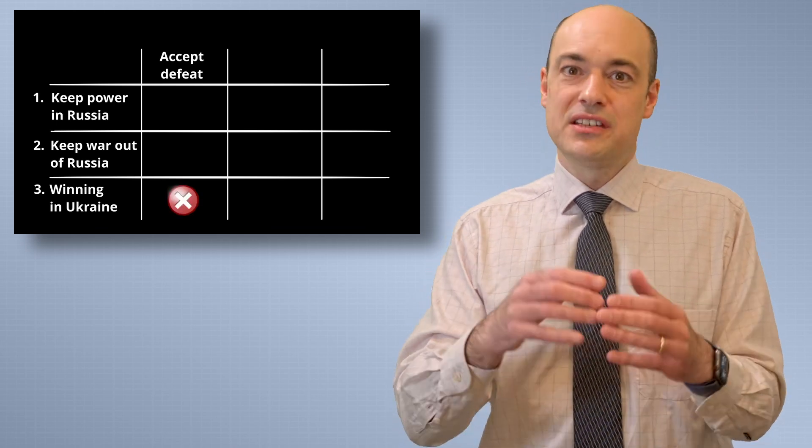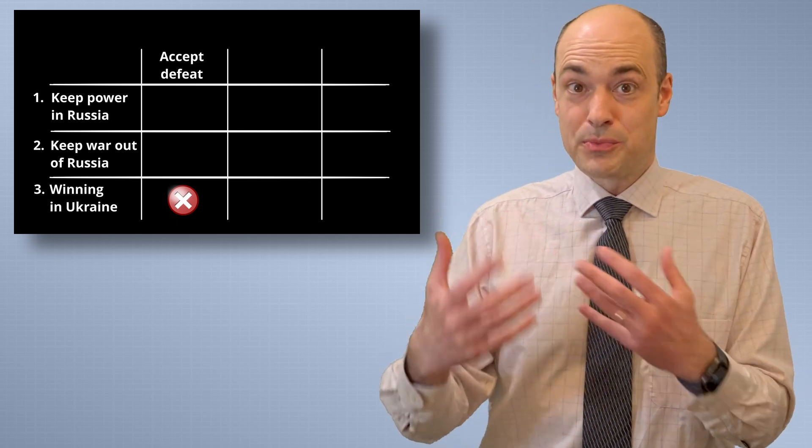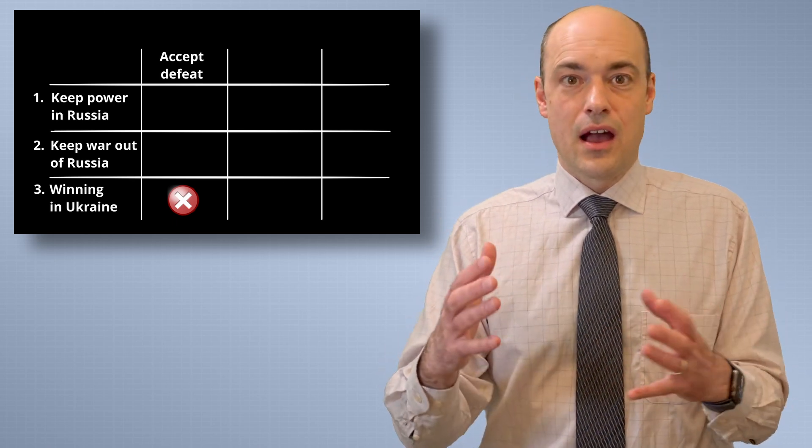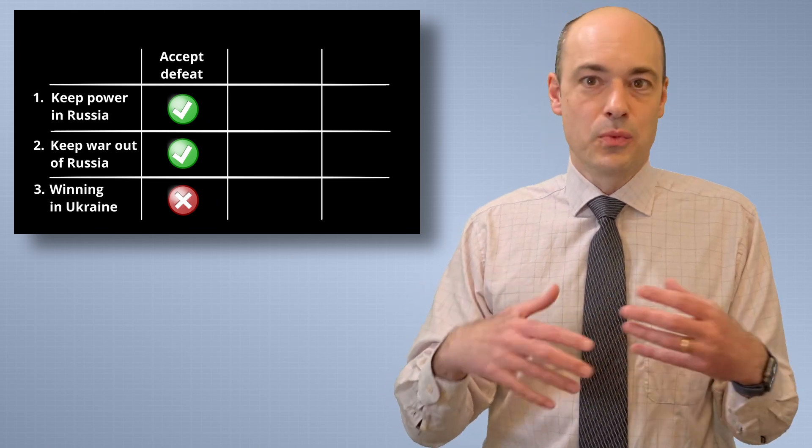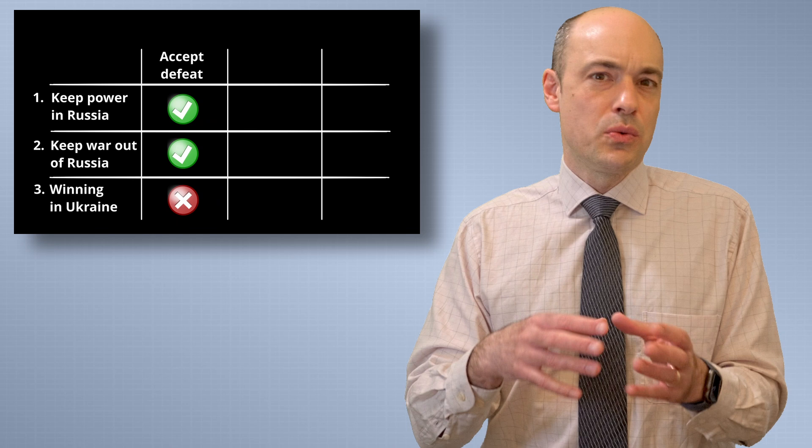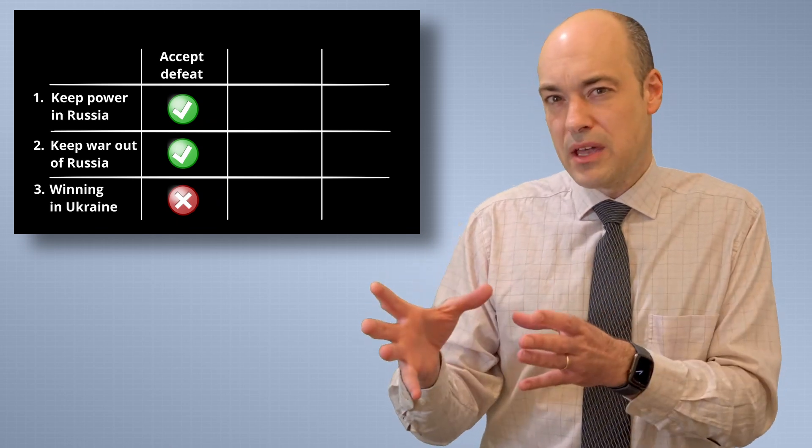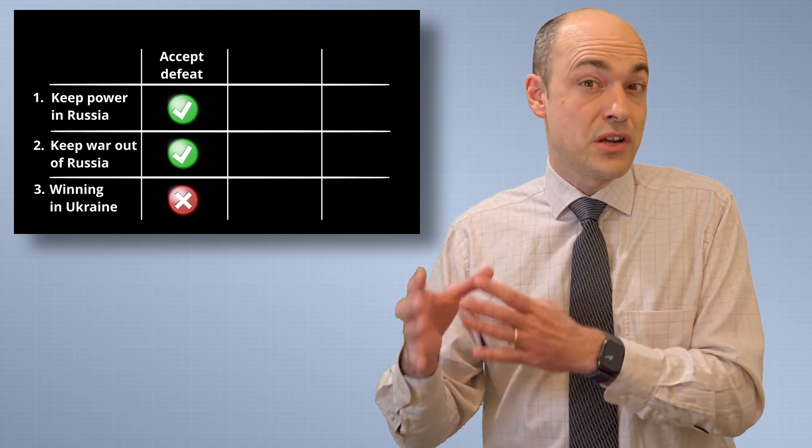If we measure this outcome against the priorities, then obviously Russia won't achieve their third priority of winning in Ukraine. But the top two priorities are pretty safe. There will not be a major war on Russian territory. And with the right public framing of the exit from Ukraine, I think Putin will also maintain very good control over Russia.